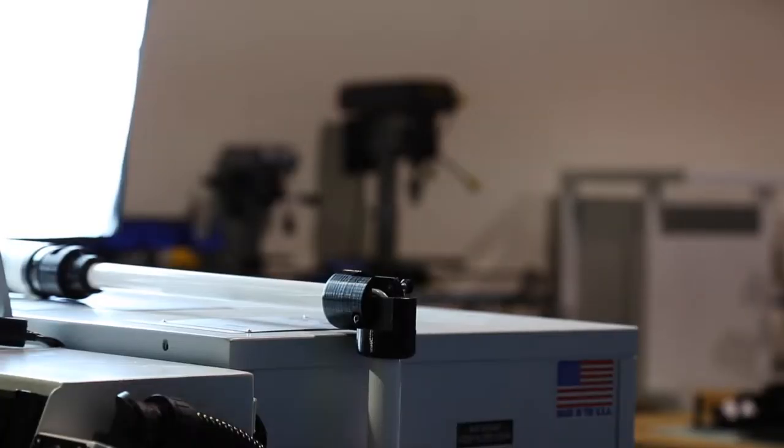Unbox and unwrap machine and components. Set light tower vertically and tighten thumb screw.